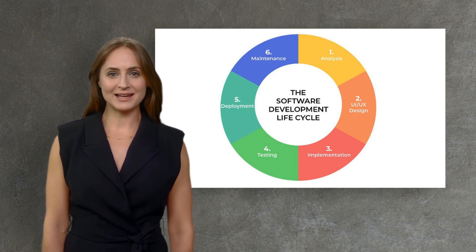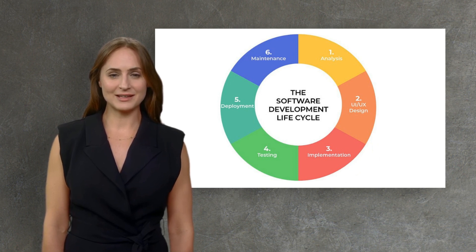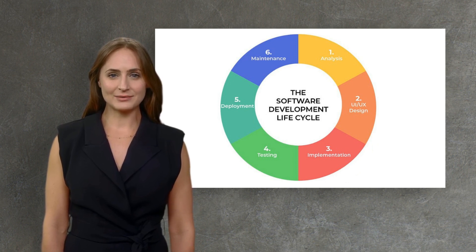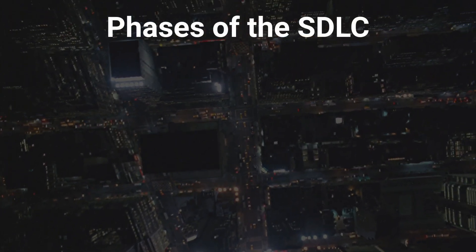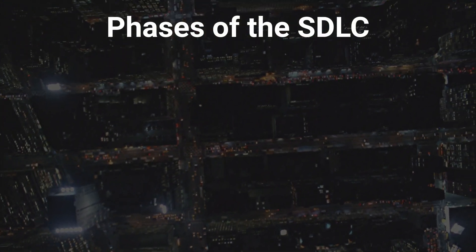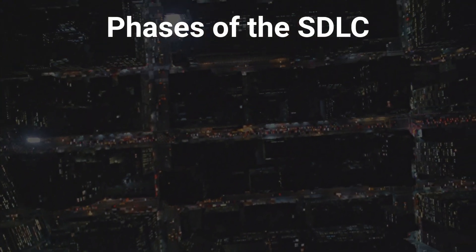To review, the SDLC is a framework that describes the steps involved in the development of software. It's a process that ensures high-quality, efficient, and error-free software. It's not just about coding — it encompasses everything from initial planning to maintenance after deployment. Let's discuss the SDLC phases. The Software Development Lifecycle typically consists of six fundamental phases, each serving a specific purpose in the development process.